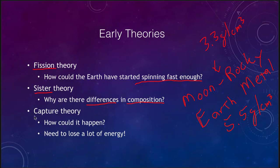A third theory that was once considered is the capture theory. It's difficult, though, because how could something get captured? It is very difficult for one object to just happen to capture another gravitationally. We can certainly do it when we send objects into orbit to explore another planet, but to have it randomly happen at just the right speeds and velocities to get it into a circular orbit is very difficult. It would also need to lose a lot of energy to get into that kind of orbit.